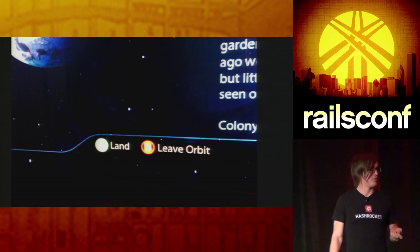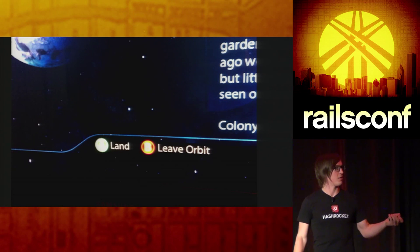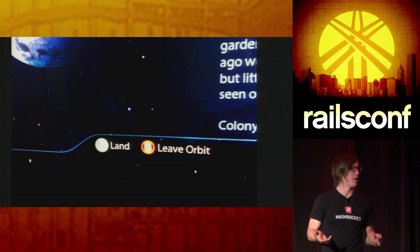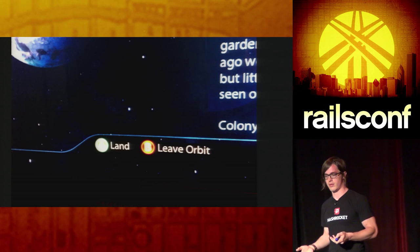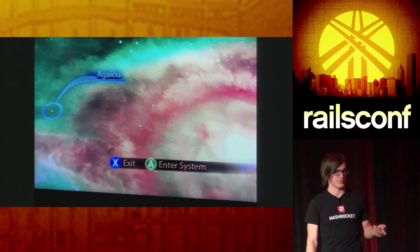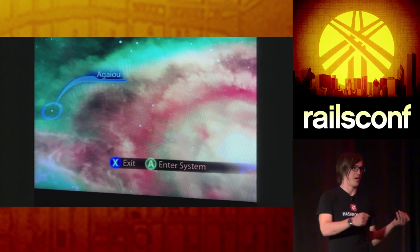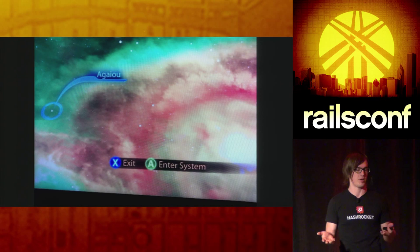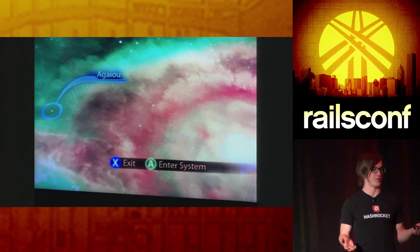For example, in Mass Effect 1, A is 'land' and B is 'leave orbit.' So A basically does the thing, B backs you out. Same exact game, different screen, same spaceship — A is 'inner system,' B doesn't do anything, and X is 'exit,' which actually backs you out of the menu. There's no particular reason for this other than somebody didn't think about maintaining a common language with basically all of video games. I'm the user on the other side accidentally hitting B.